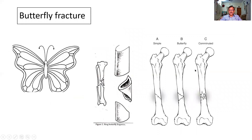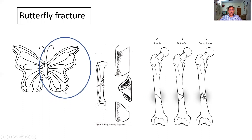There is also a fracture called the butterfly fracture. Look at this — the bone is broken into a triangular fragment. This is somewhat similar to the wing of a butterfly, and so it is called a butterfly fracture.